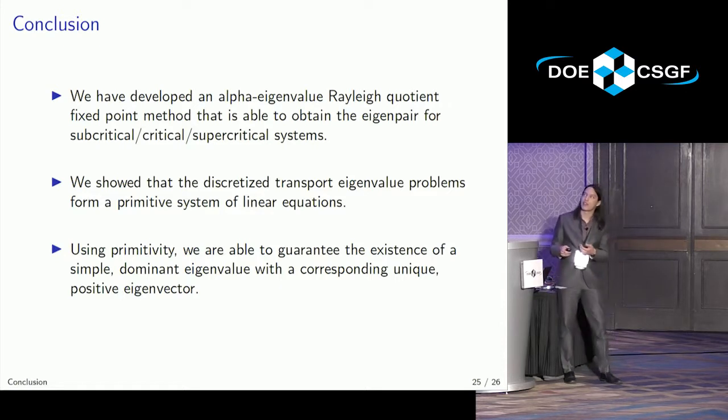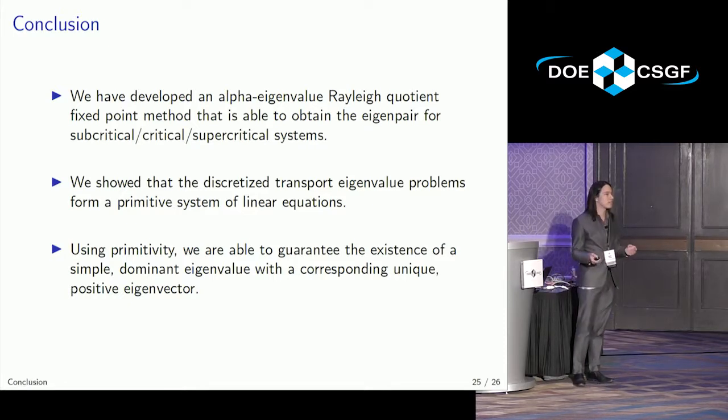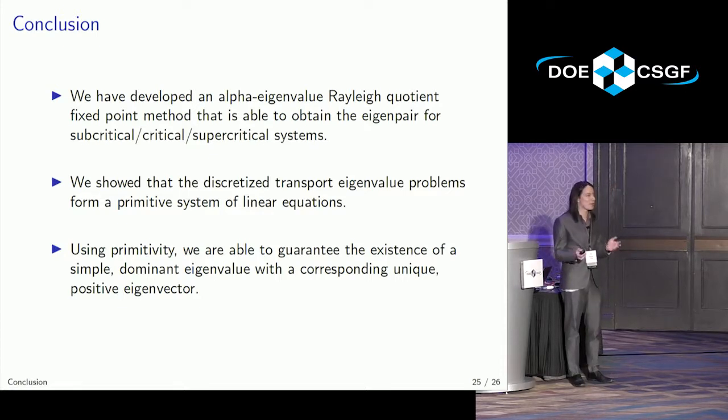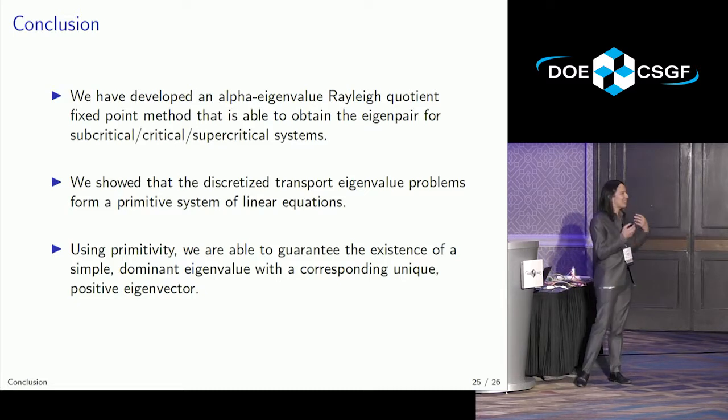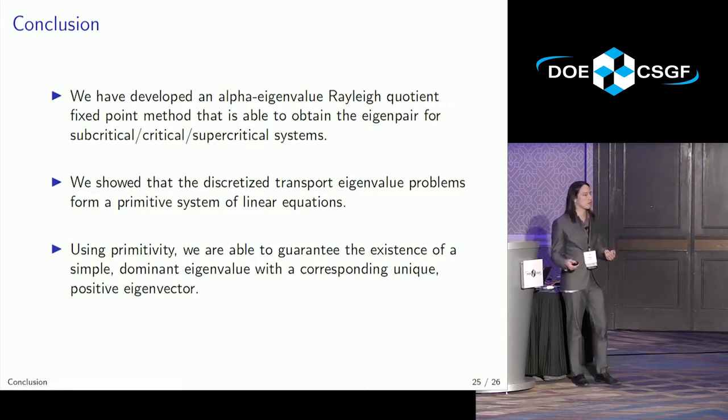So in conclusion, we have developed an alpha eigenvalue Rayleigh quotient fixed point method that is able to solve for the eigenpair of subcritical, critical, and supercritical systems. We have a mathematical proof that shows that the discretized transport equation actually forms a primitive system of linear equations. Nobody wants to see a proof in slides, but it's actually quite, I'm quite proud of it. And it's only a page long, because everything in math is so obvious in hindsight. But this took years. And using primitivity, by leveraging the properties of the matrices themselves, we can actually guarantee the existence of what we're looking for, which is important, and then we can find a clever way to get it back out.